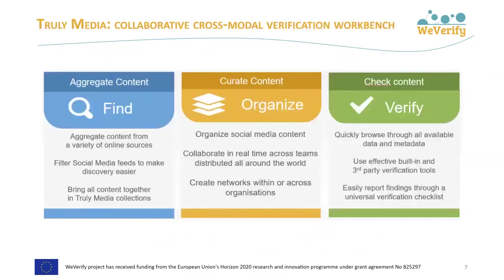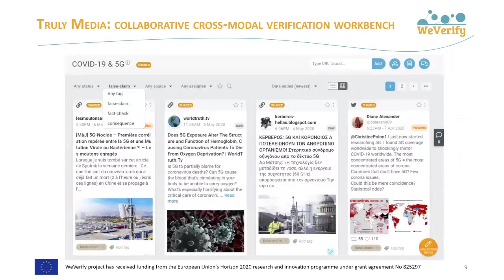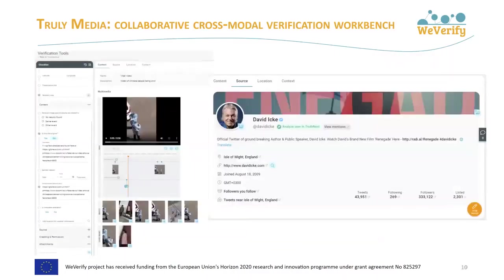TrulyMedia helps journalists work together in investigation and is closely connected to TruthNest, which provides detailed analytics on single posts. TrulyMedia operates in three steps: Find, Organize, and Verify. In the first step, users set up the sources and queries they need to monitor. In the second, they set up a collaborative workspace around a particular investigation to gather and organize relevant content. In the third, they analyze the gathered content with the help of a variety of internal or third-party tools.